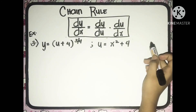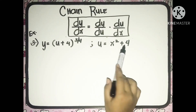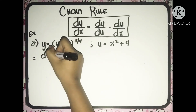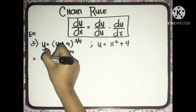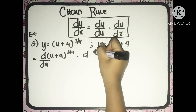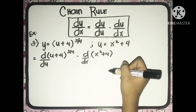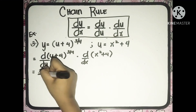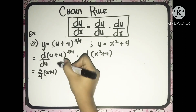Third example for chain rule: given y is equal to u plus 4 raised to 3 fourths, and u which is equal to x squared plus 4. Again, applying the chain rule, we'll have the derivative of u plus 4 raised to 3 fourths with respect to u, multiplied to the derivative of u which is x squared plus 4 with respect to x. Applying the rules in differentiation, we'll have power rule: 3 fourths multiplied to u plus 4 raised to 3 fourths minus 1.